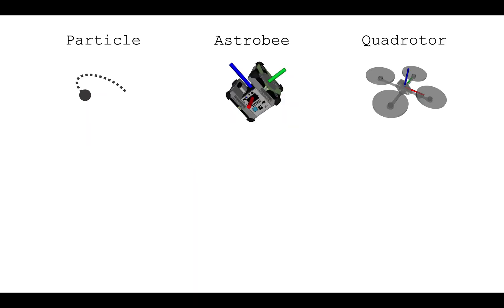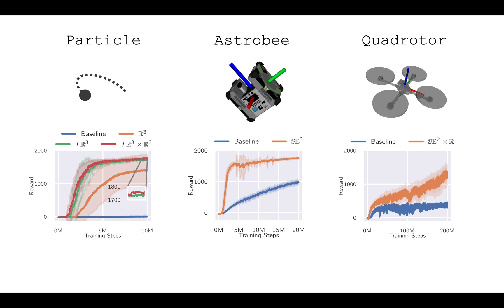We apply the approach to three physical systems and compare the result with a symmetry-unaware baseline. After the same number of training steps with the same hyperparameters, we see a clear improvement in sample efficiency during training and zero-shot tracking performance on pre-planned reference trajectories.